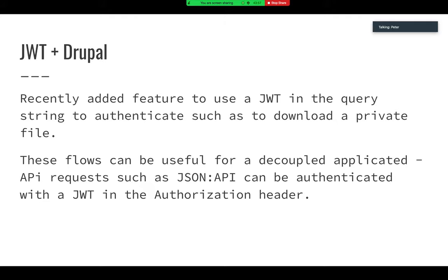These flows where you have direct authentication can be useful for decoupled applications, and that's where a lot of people are using JWT - for example, in combination with JSON API. API requests for a JSON API resource can be authenticated with a JSON Web Token in the authorization header. If you have a user request a JSON Web Token from the Drupal site and store it in a JavaScript application, you could then use it to make repeated API requests and serve updates to them in the frontend. That's the primary use case of this Drupal JWT module: decoupled applications.